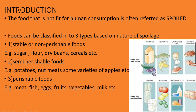The second type is semi-perishable foods. Examples include potatoes, nut meats, and some apples, which can be stored without spoilage for a few days — not many days, but a few. The third type is perishable foods, which will spoil immediately within hours.